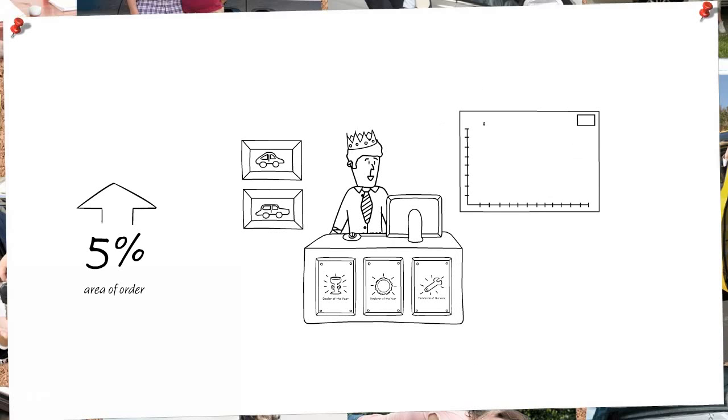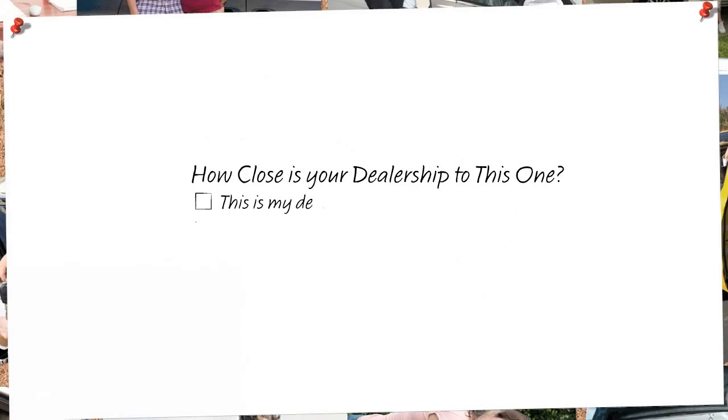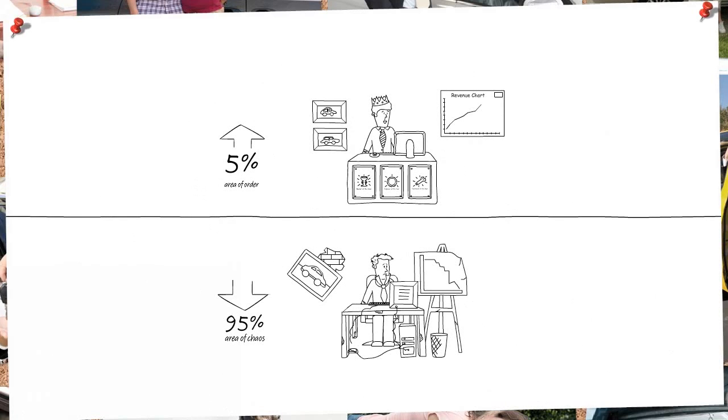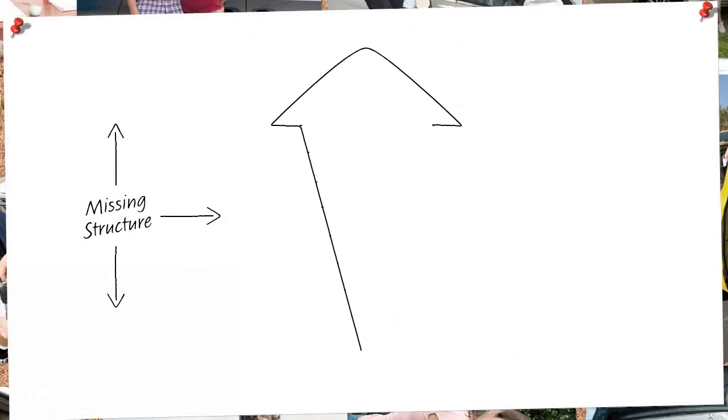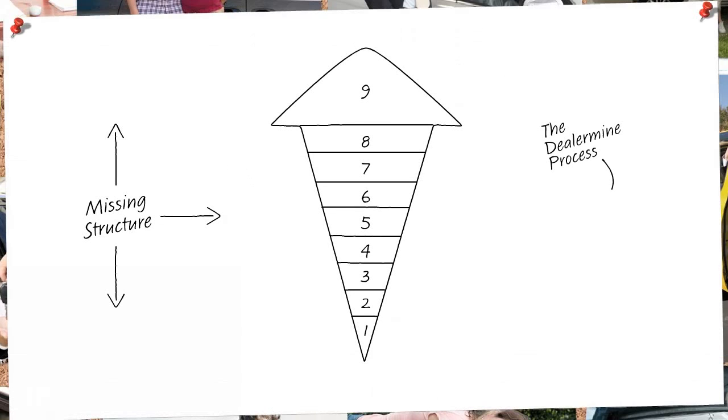He also knows exactly how smoothly his drive-through runs and how efficiently each technician performs. How close is your dealership to this one? So how do they do it? What is the missing structure in this diagram?